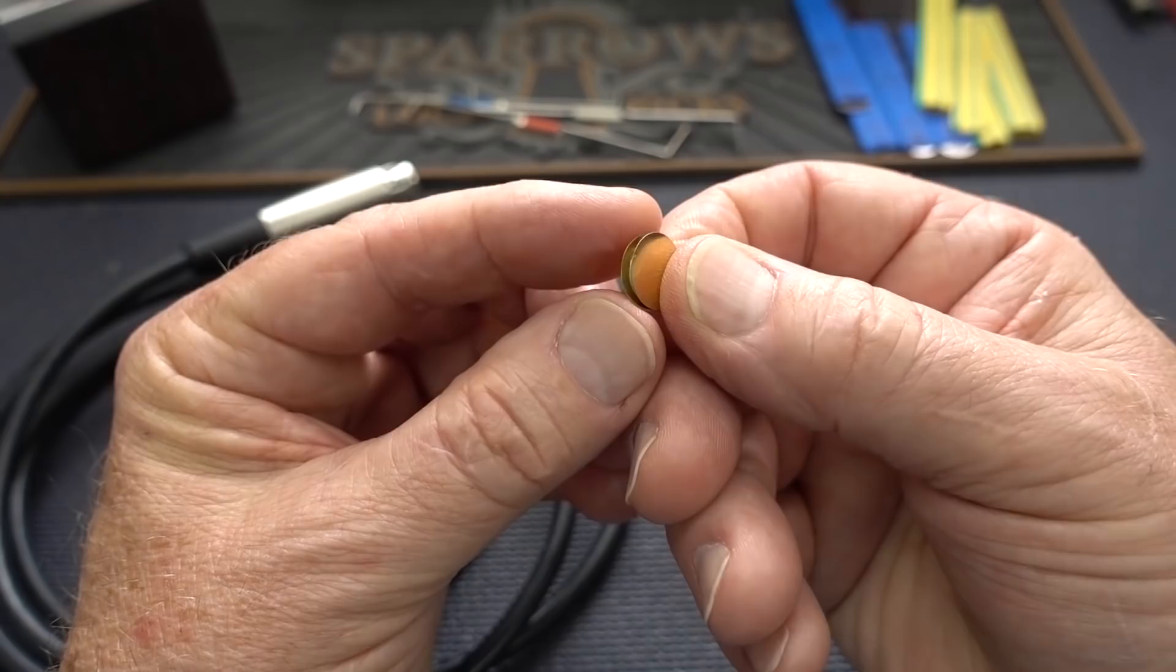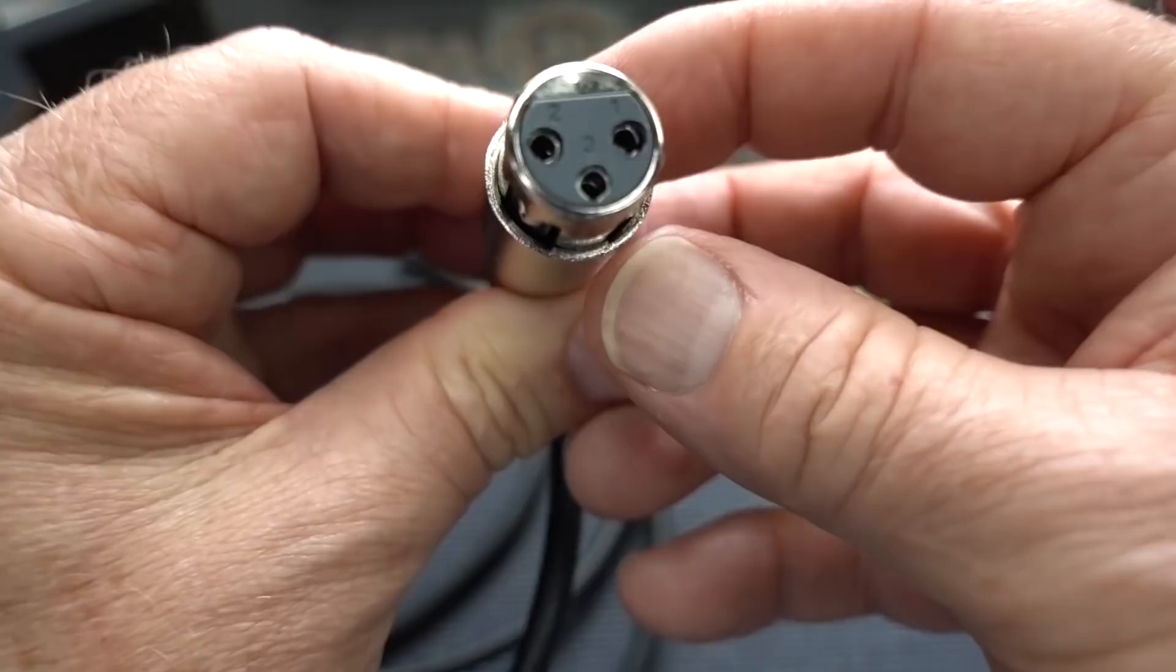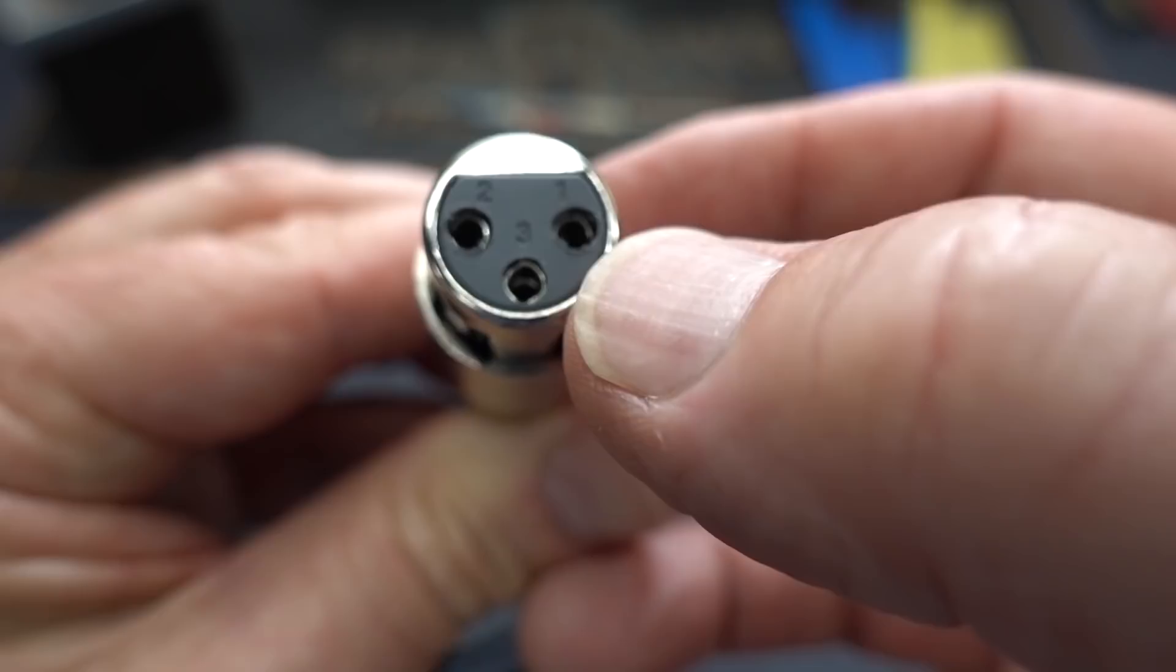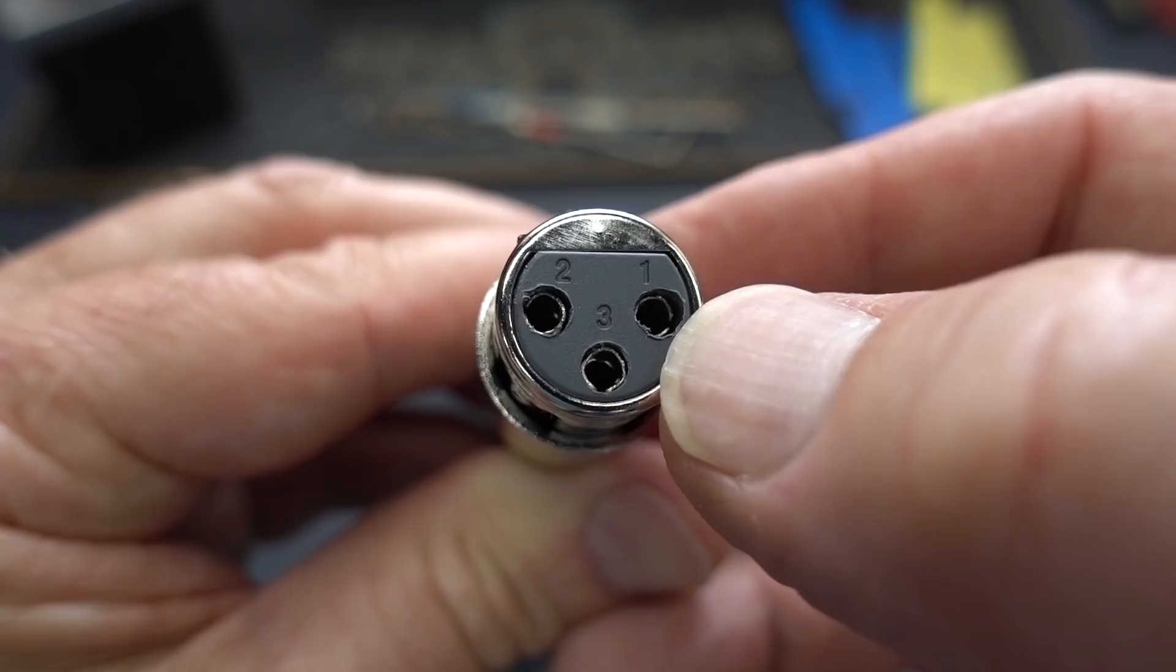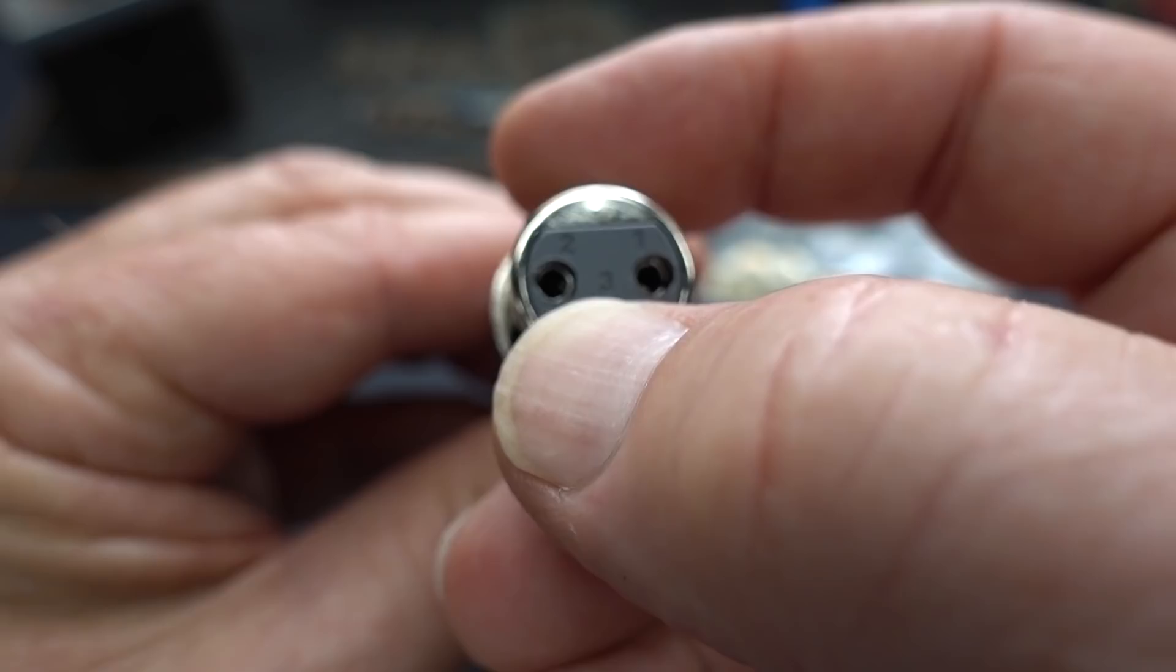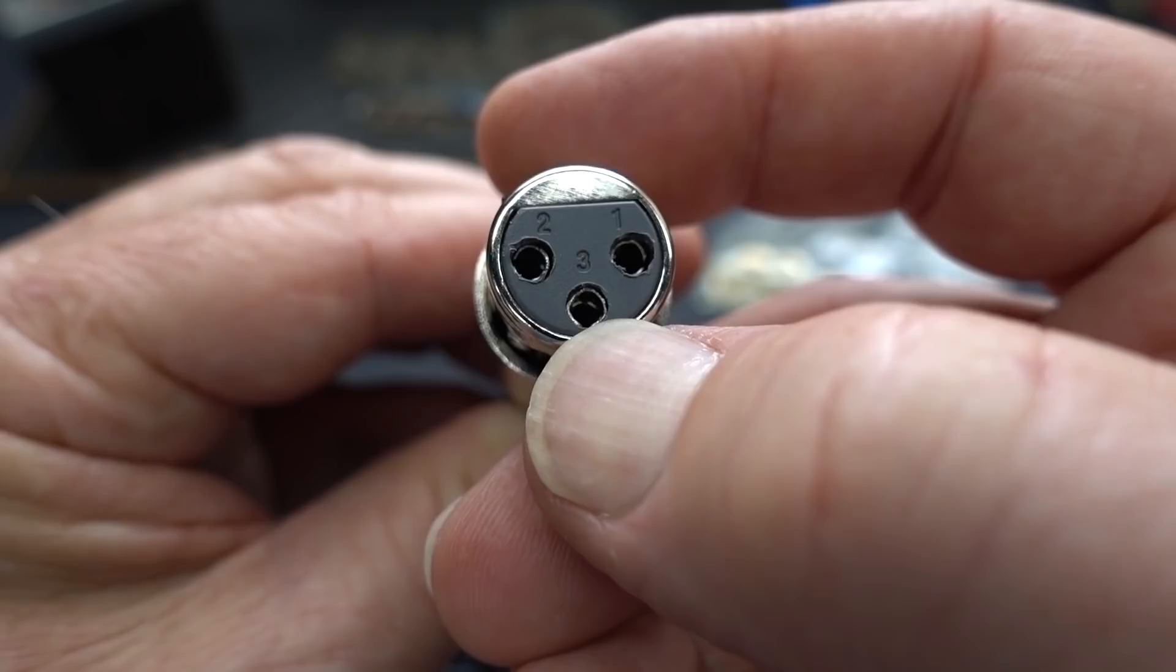Now, before we do that though, I have to take a look at the cable. If you take a look here, you'll notice that the terminals are numbered. We have number one located right there next to my thumbnail, and that's the ground. Over here on the left, we have number two. That's the positive. And on the bottom here, we have terminal number three. That's the negative.